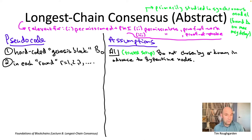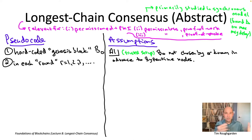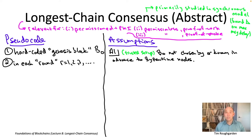In proof of work longest chain protocols like Bitcoin, rounds don't correspond to intervals of time except in a loose average sense. In fact, you don't need to assume nodes have a shared global clock at all — which is a remarkable property. Rounds are defined in a purely event-driven way: whenever a node solves a hard crypto puzzle and earns the privilege of producing a block, we call that the next round. Rounds correspond to the events of nodes successfully solving crypto puzzles and producing blocks.